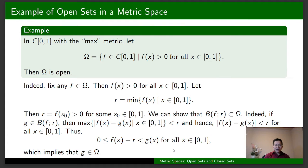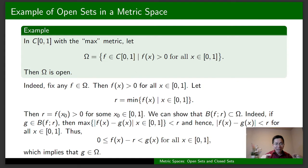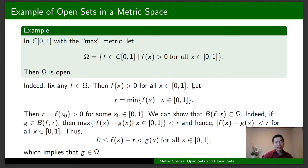To prove that Omega is open, we use the definition by fixing any f in Omega. Our goal is to show that there exists some radius r such that the open ball with center f and radius r is a subset of Omega. Because f is in Omega, f(x) is strictly greater than zero for all x in this interval. So let r be the minimum value of f on this interval.